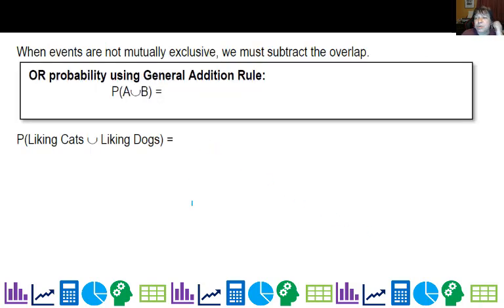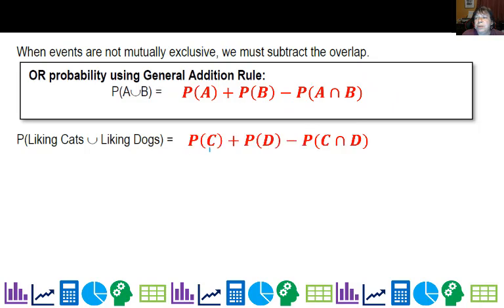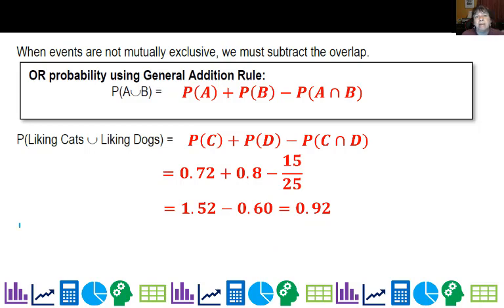Now the general probability addition rule says I can add the probabilities, but I need to make sure I subtract the overlap. So the probability of cats plus the probability of dogs minus the probability of cats and dogs. And so the probability of cats is 0.72. It's 0.8 for dogs. People who like cats and dogs, there were 15 of those out of 25. So I added these two together to get 1.52. This is 0.6. And I end up with 0.92, which is exactly the same answer I had before when I went ahead and individually counted them.